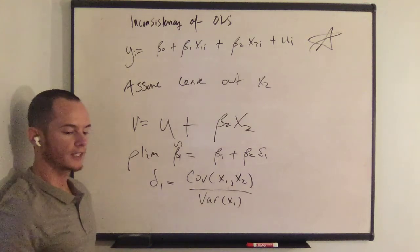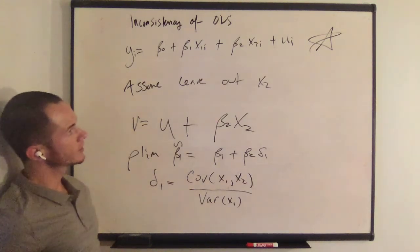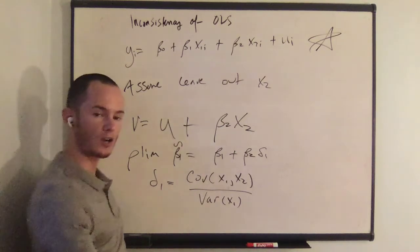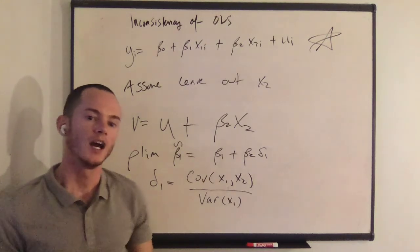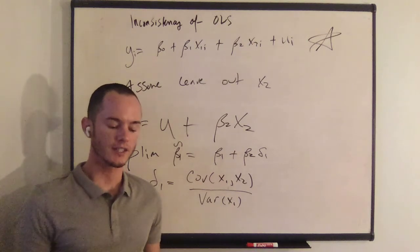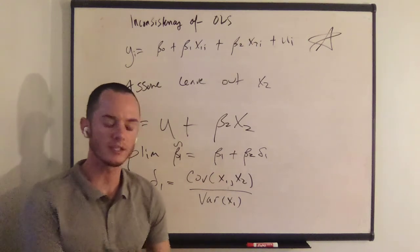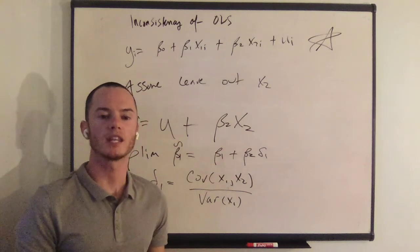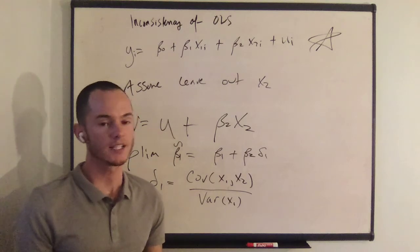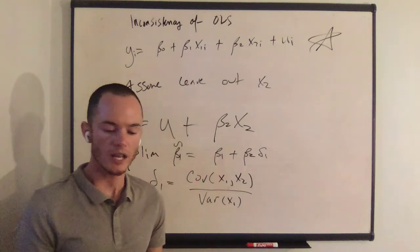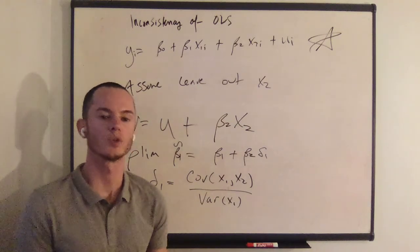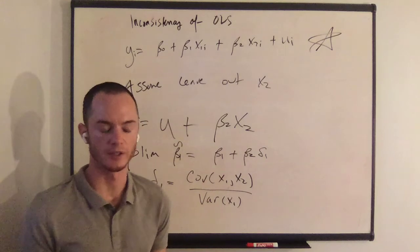Please also note that if one coefficient is inconsistently estimated, all other coefficients are going to be inconsistently estimated, unless the coefficient that is inconsistently estimated is completely, perfectly, totally uncorrelated with the other included explanatory variables. If that is not the case, then the other included explanatory variables will have coefficients that are inconsistent as well, due to the correlation amongst the variables.